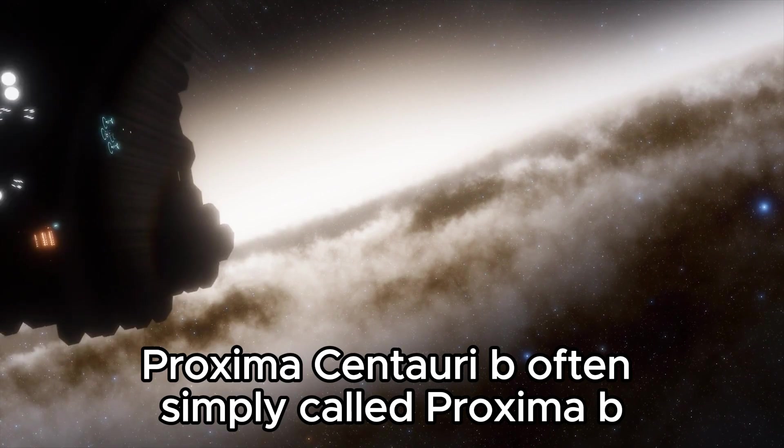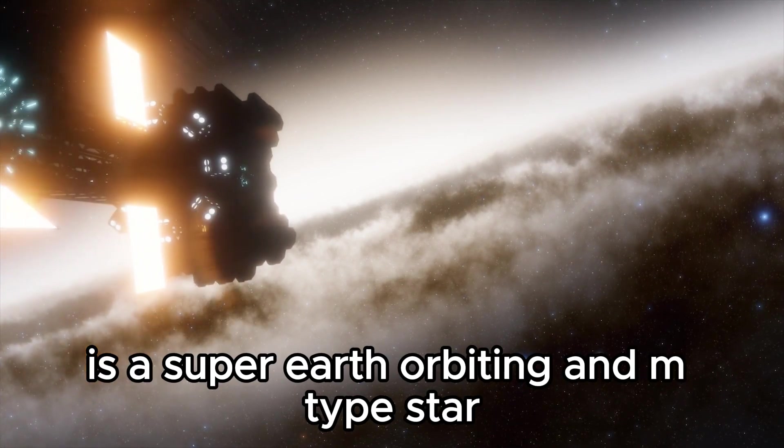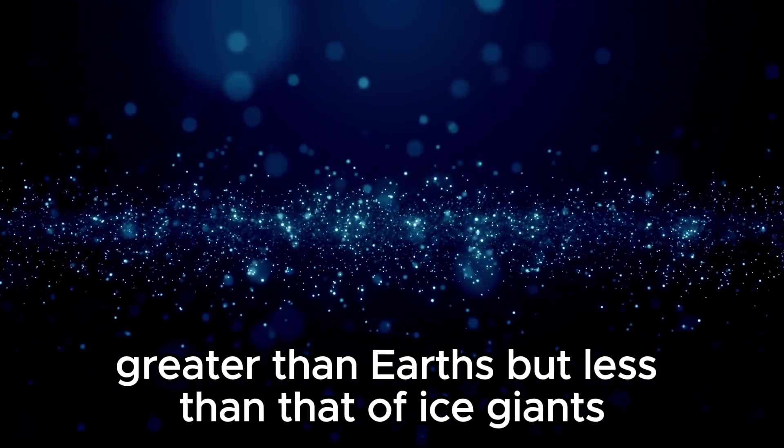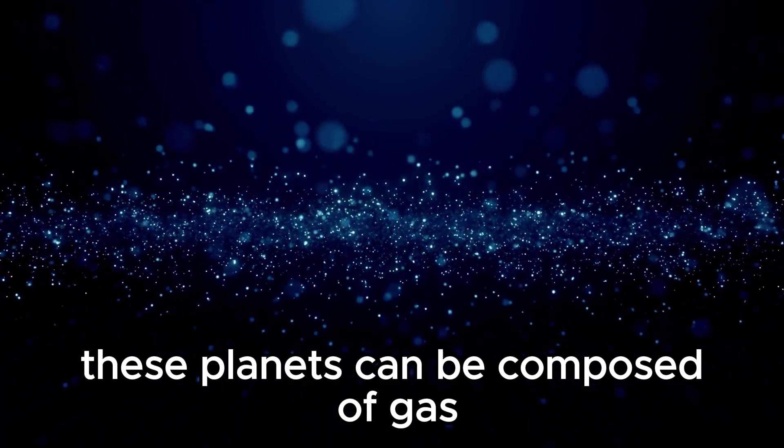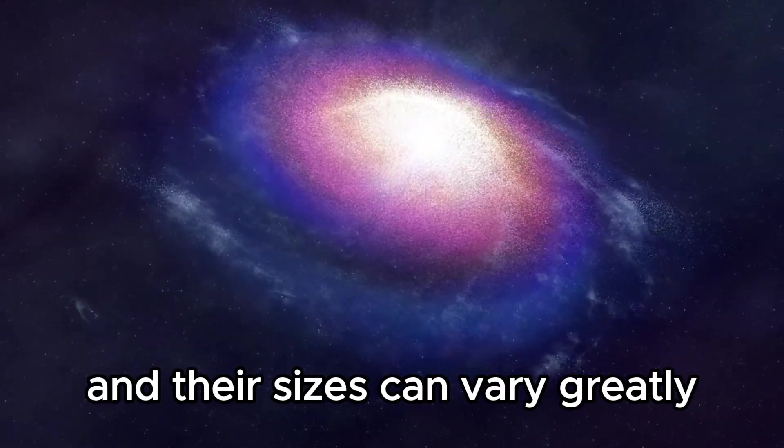Proxima Centauri b, often simply called Proxima b, is a super-Earth orbiting an M-type star. Super-Earths are planets with a mass greater than Earth's but less than that of ice giants like Neptune and Uranus. These planets can be composed of gas, rock, or a combination of both, and their sizes can vary greatly.